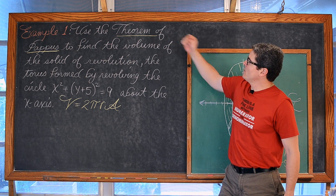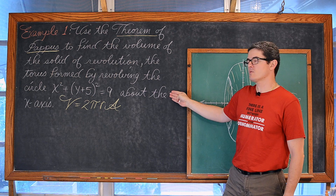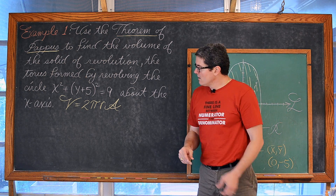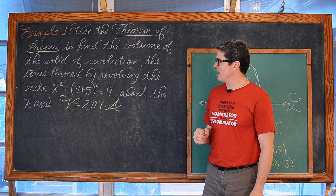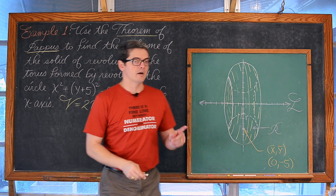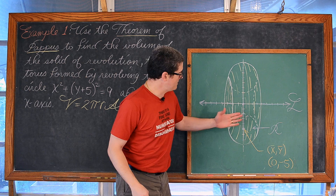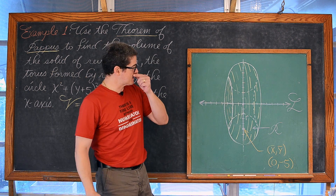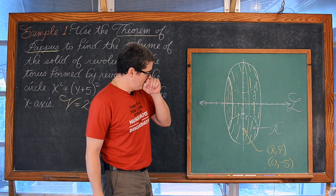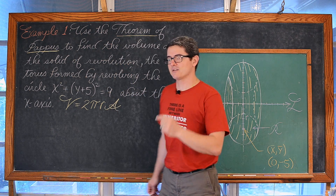Example 1: Use the theorem of Pappus to find the volume of the solid of revolution — the torus — formed by revolving the circle x² + (y + 5)² = 9 about the x-axis. We have a circle whose center is at (0, −5) and whose radius is 3. We are revolving this about the x-axis, essentially drawing a three-dimensional donut. This problem took longer to draw than it will be to solve; the second example will be a lot more interesting.